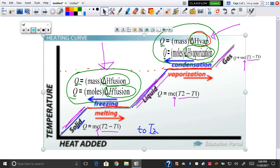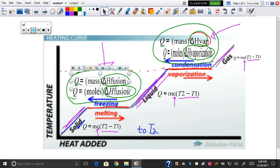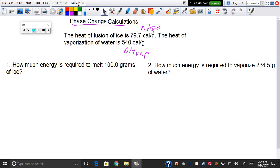Q equals mass times delta H of fusion. I go back here, get my pen, and Q equals mass times delta H of fusion. Now mass is 100 grams.